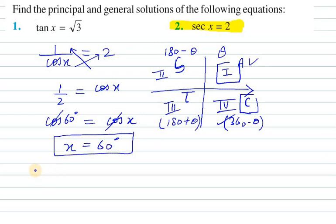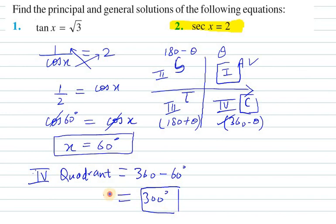So now we need to find for the fourth quadrant. The fourth quadrant will be 360 minus theta, so 360 minus 60 equals 300 degrees. So another value for x is 300. The first is 60 degrees.